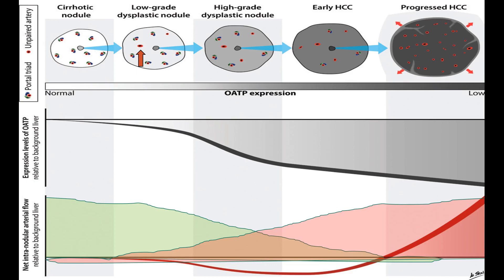From low-grade dysplastic nodules onwards, nodules become progressively hypointense in the hepatobiliary phase. We can also see that although new arterial supply increases and portal supply decreases, the balance between these processes is such that only at the level of progressed HCC do we see arterial phase hyperenhancement. Therefore, the traditional criteria of arterial phase hyperenhancement only identify progressed HCC.